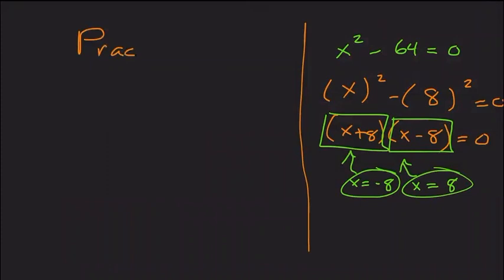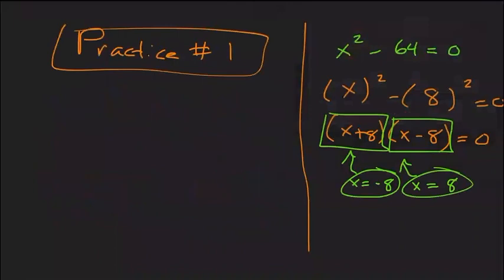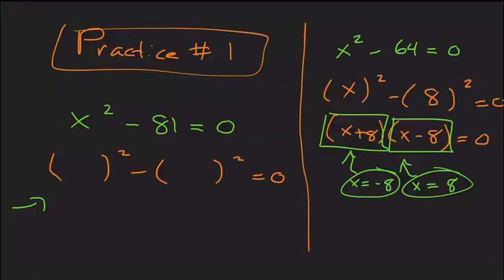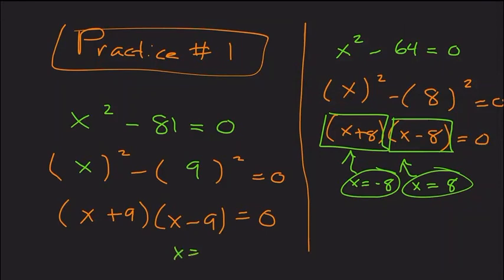Let's try a practice problem: x squared minus 81 equals 0. Pause the video and give it a try. So x squared minus 81 equals 0 — we use the difference of two squares method. 81 is 9 times 9, so this factors into x plus 9 times x minus 9 equals 0. By inspection, x equals positive 9 and x equals negative 9.